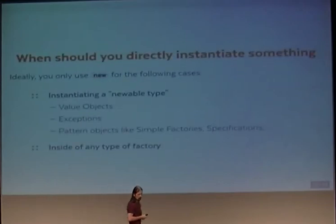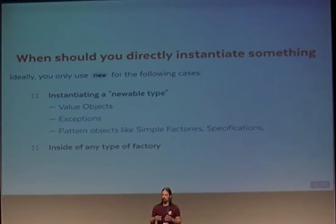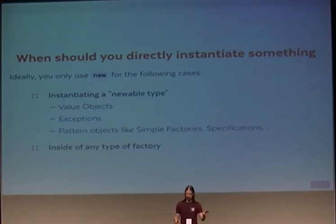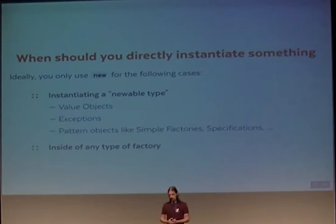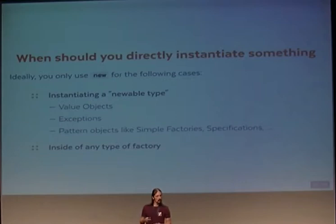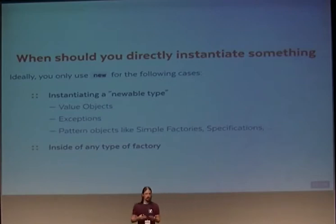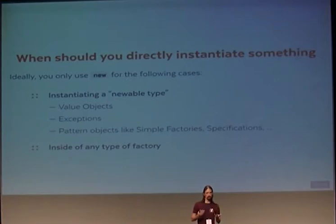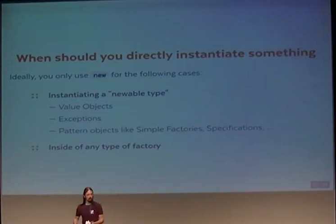With these factories, when should you directly instantiate? The basic premise of object-oriented code is that everything is properly decoupled — a change in one place shouldn't require changes elsewhere. This is why the direct coupling from direct instantiation should normally be avoided. You can use the new operator for stable types like value objects, exceptions, or simple factories when that makes sense. And inside a factory itself, of course, you use direct instantiation — that's the main reason you have it.